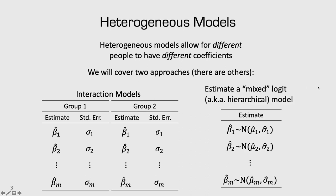Another approach is called a mixed logit model or a hierarchical model. In this case, we still have our baseline estimates of single parameters beta 1, beta 2, and so on, except we're going to assume that each of these parameters follows its own distribution. For example, beta 1 is normally distributed across the population with a mean parameter and a standard deviation parameter. So I'm allowing beta 1 to vary across people in my survey, but restricting how it varies according to some distribution. In both approaches, we estimate more parameters than a homogeneous model, but the number of parameters remains feasible.